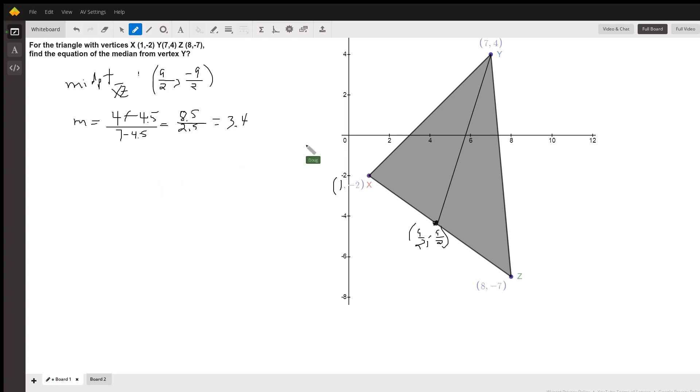Okay, and now we can use point slope to write this equation. We can use this point, 7, 4, or we can use this point. So I'll use the 7, 4. So y minus 4, that's y minus y sub 1, equals the slope, 3.4 times the quantity x minus 7. So that is the equation of the median.